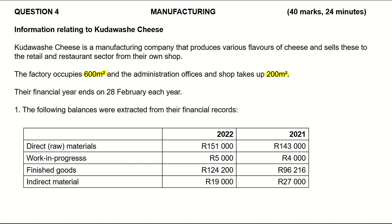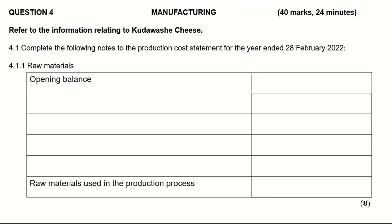The first item is direct material. For last year it was 145,000; for this year it is 151,000. I'll record it straight in my direct material cost note. I'll start with the opening balance of 143,000 and put the closing balance in brackets as 151,000.